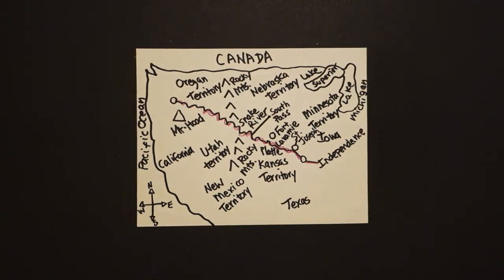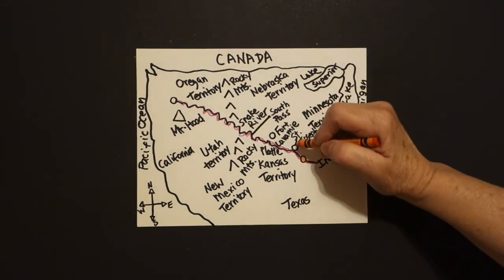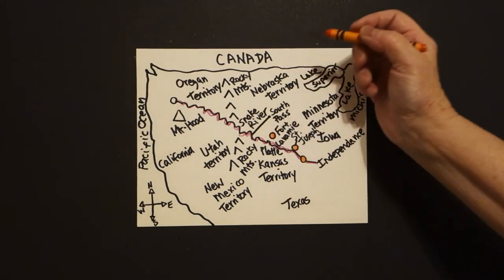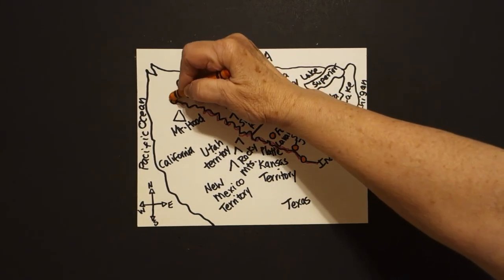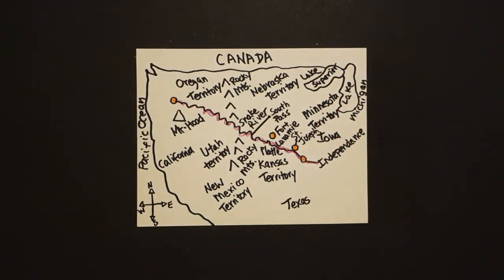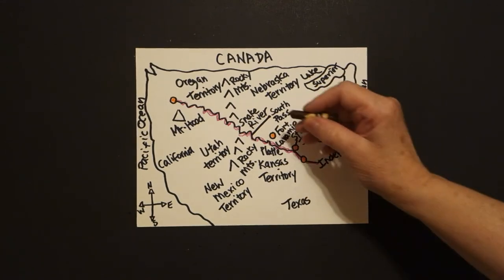Next, I took red-orange, and I colored in these baby circles that represent cities or stop-offs for people to get their supplies, get new animals. And this is very important.